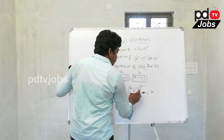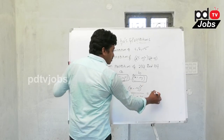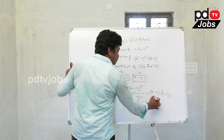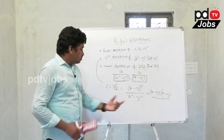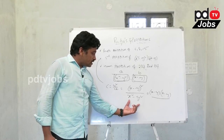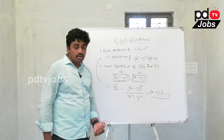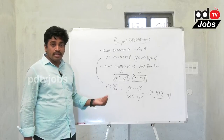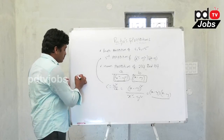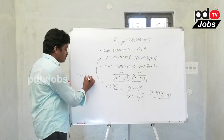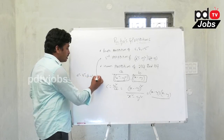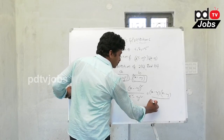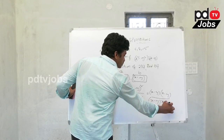Here (x - y)² is nothing but (x - y) into (x - y), divided by x² - y². Using the identity a² - b² = (a + b)(a - b), we expand x² - y² as (x + y)(x - y).